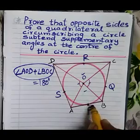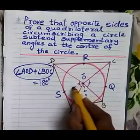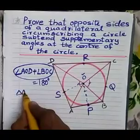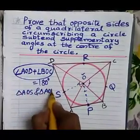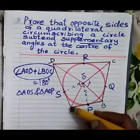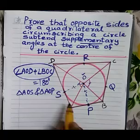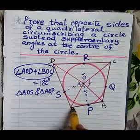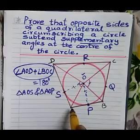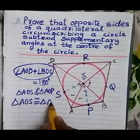We join OP and OS to the centre O. Now we can see two triangles: triangle AOS and triangle AOP. OP and OS are two radii, OA equals OA — common side. From the external point A, AP and AS are two tangents to the circle, so AP equals AS. Therefore these two triangles are congruent — triangle AOS congruent to triangle AOP.